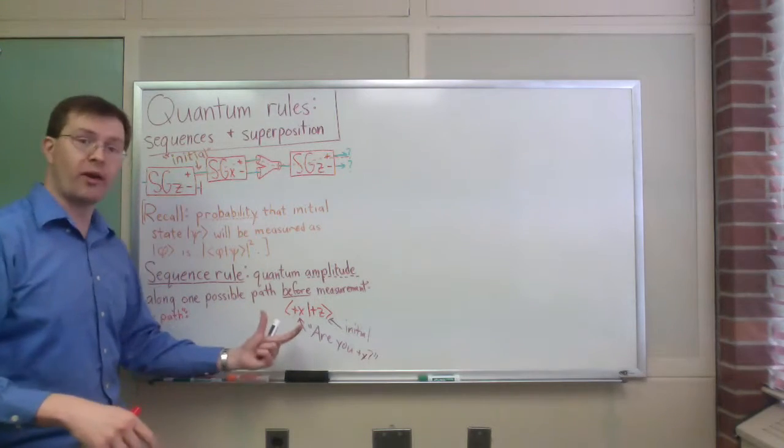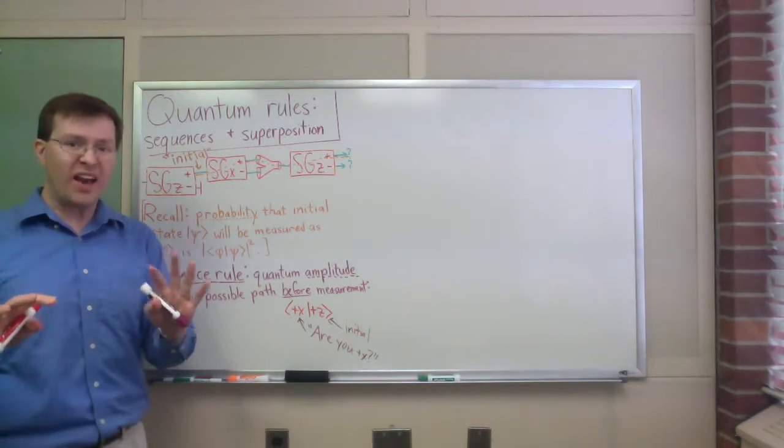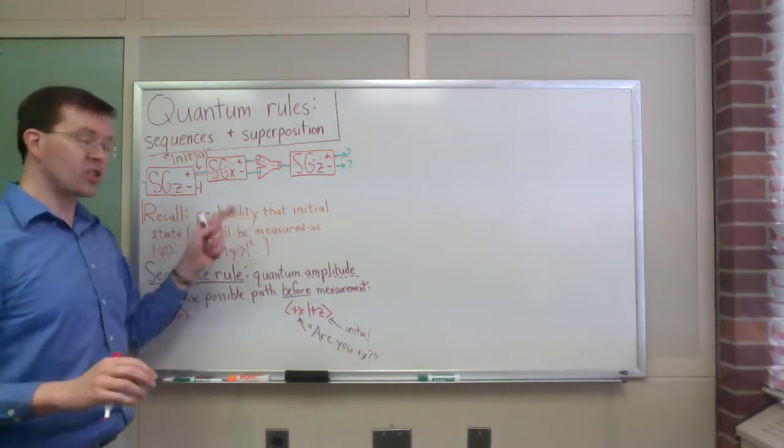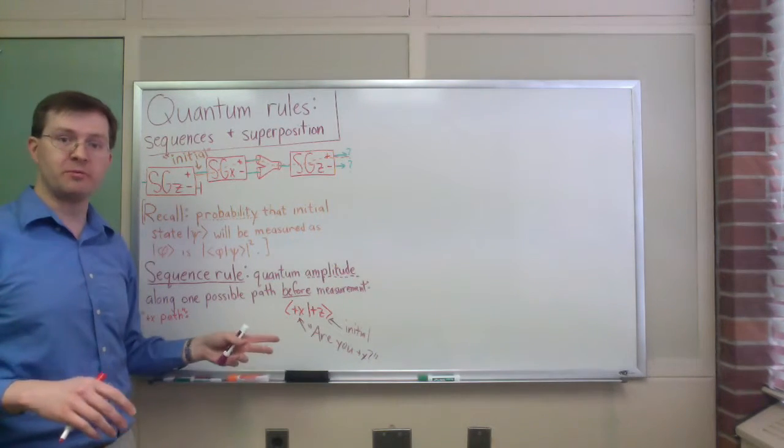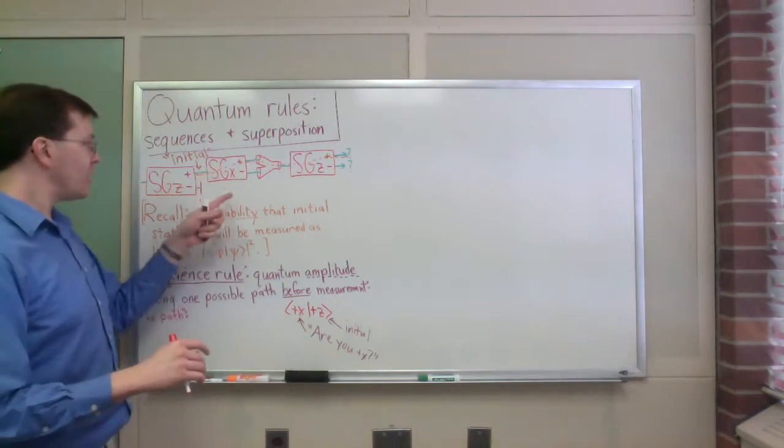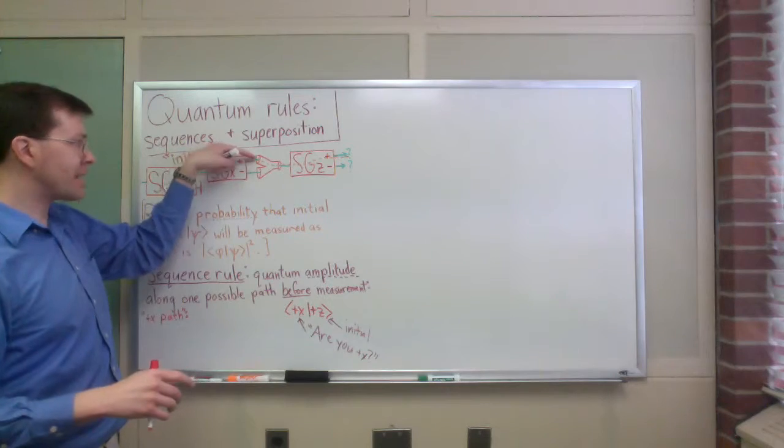It's asking that question. We're not making a measurement yet, so we don't square it. But it's sort of asking that question. If the answer to the question is yes, which we basically assume it is, because we're following the yes path, then that means as it comes through that step there,